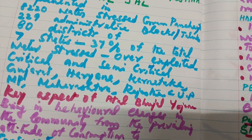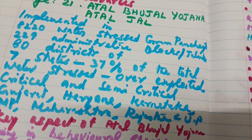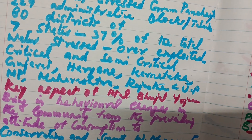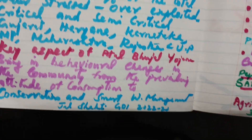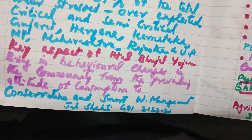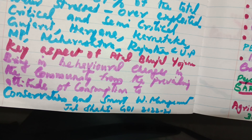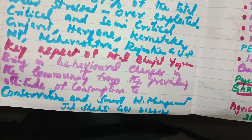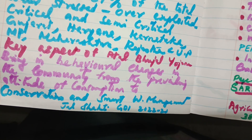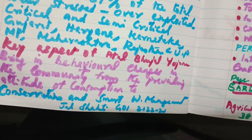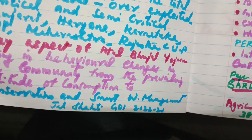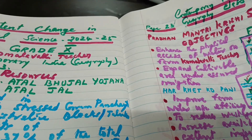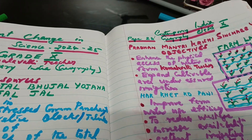In these 7 states, the project has been implemented. A key aspect of Atal Bhujal Yojana is to bring behavioural changes in the community — changing attitudes from consumption to conservation and smart water management. This is according to the Jal Shakti annual report published by the Government of India, 2022-23. This is one addition made in the Class 10 Geography textbook.